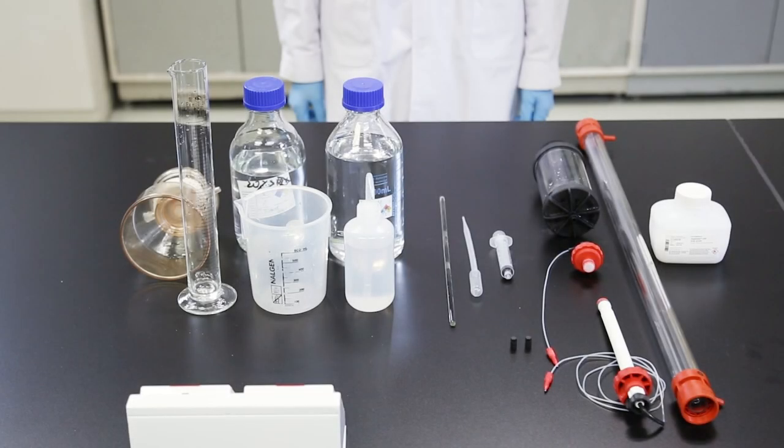In this video, we will show you how to pack an XK 16 over 70 column with a size exclusion chromatography resin, Superdex 75 prep grade. The dimension of the column is 16 mm inner diameter and 70 cm height. We will pack the column with approximately 120 milliliters of resin.